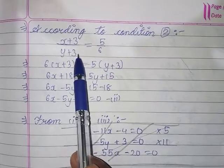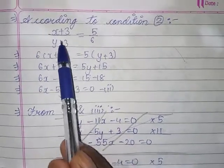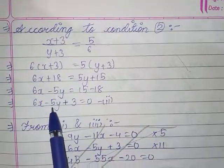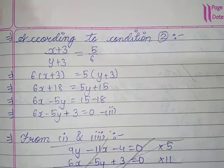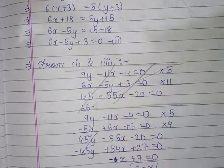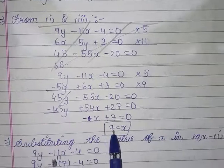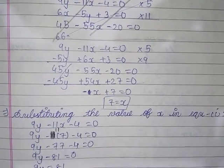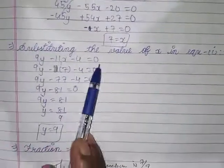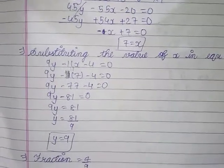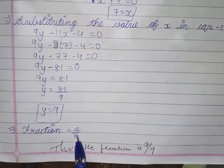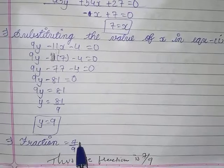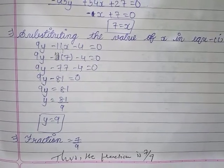If 3 is added to both numerator and denominator, the fraction becomes 5 by 6. So (X+3)/(Y+3) equals 5/6. Cross-multiplying gives 6X minus 5Y plus 3 equals 0. Solving both equations gives X equals 7 and Y equals 9. Thus the fraction is 7 upon 9.